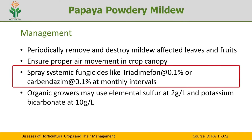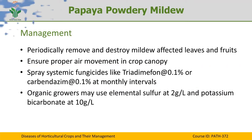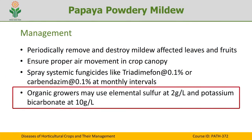Systemic fungicides like carbendazim can be sprayed at 1 gram per liter of water, or tridemorph at 1 gram per liter of water. These sprays need to be repeated at monthly intervals based on the severity of the disease. For papaya plants grown under organic farming conditions, these systemic fungicides cannot be used. For organic growers, elemental sulfur is highly specific for the management of powdery mildew and can be sprayed at 2 grams per liter of water.